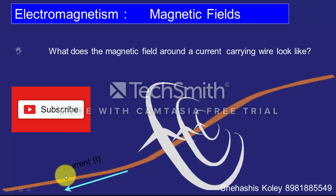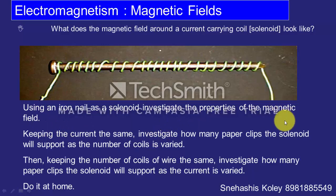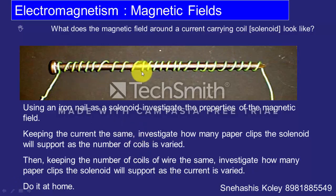A conductor carries current from right to left and due to this, a magnetic field is produced, shown in white. A solenoid is made by spiraling an insulated copper wire around an iron nail. When current is passed through this solenoid, a magnetic field is produced. Due to this magnetic field, the domains inside the iron nail align in a proper direction and the iron nail becomes a temporary magnet. If we cut off the current, the iron nail loses its magnetic property — it only behaves like a magnet while current flows.